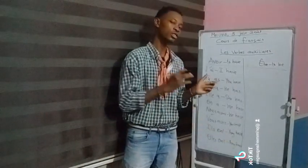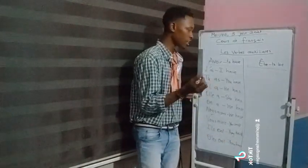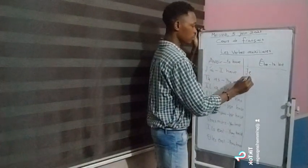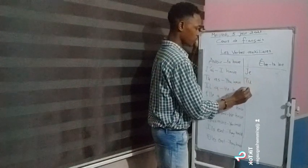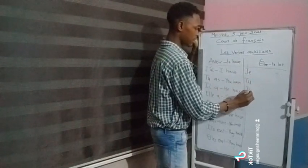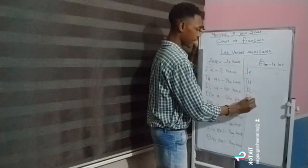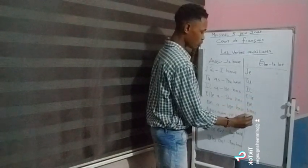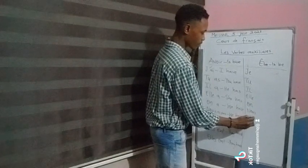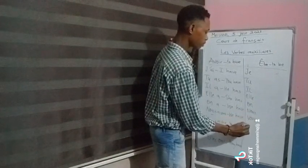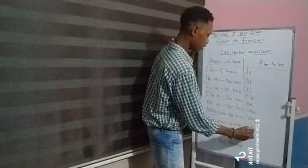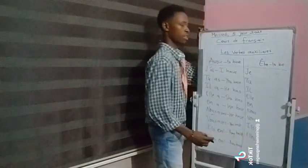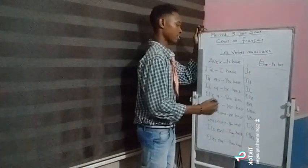Now I'm moving on to the next verb, which is être, the verb to be. Same thing — I'm going to write out the personal pronouns first: je, tu, il, elle, on, nous, vous, ils, elles. Now I'm going to conjugate it.